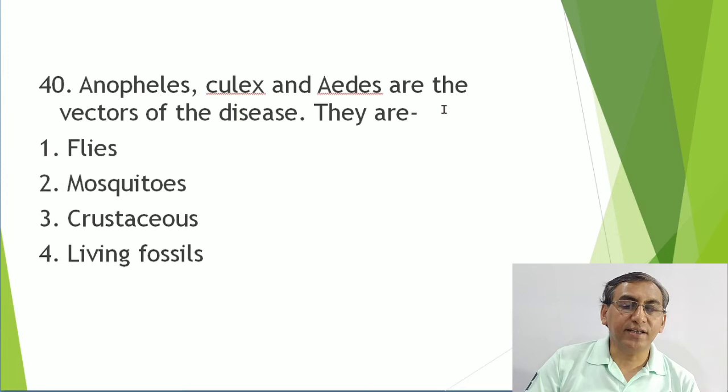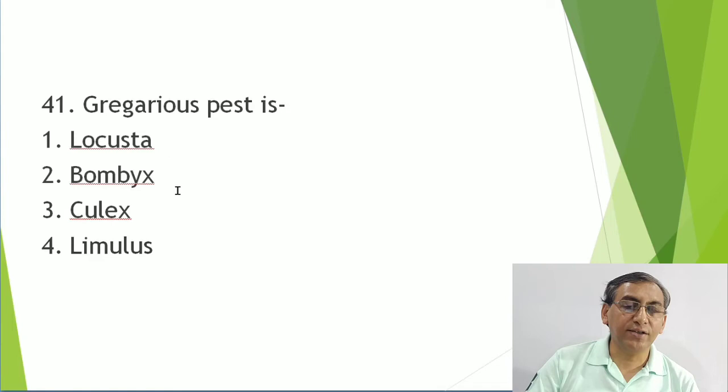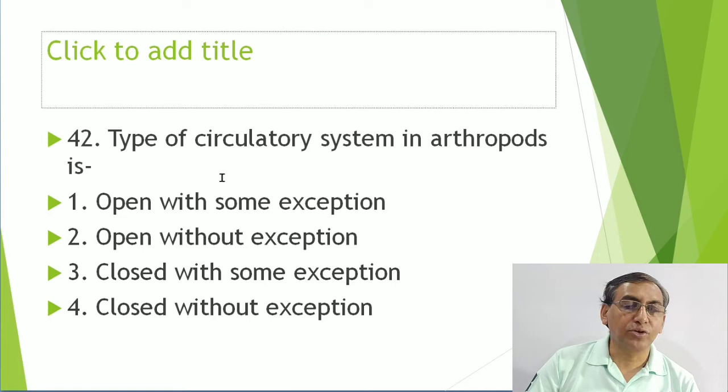Gregarious pest is the locust. Bombyx mori is the silk moth. Culex is a mosquito and a disease vector. Limulus is the king crab and a living fossil. The type of circulatory system in Arthropoda is open - without exception.